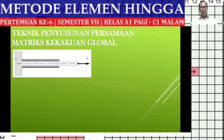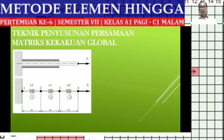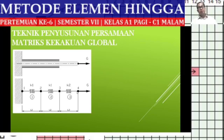There is a pattern that has two different types of models. When we divide it into elements — in this case 3 elements, then 4 elements, and 3 elements — we will get a matrix equal to the number of nodals. So we will obtain a 4×4 matrix.